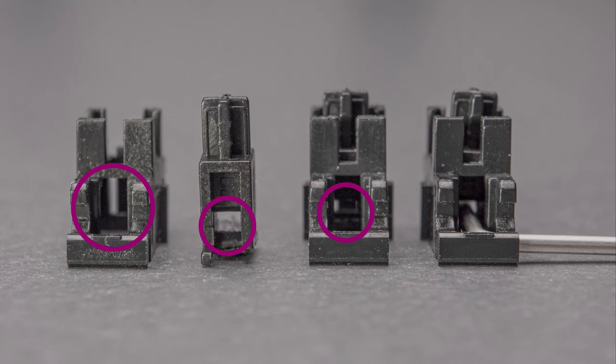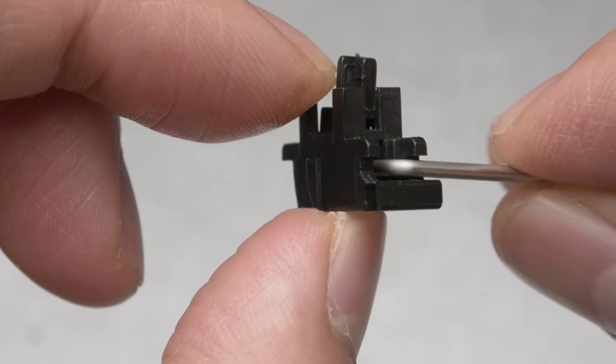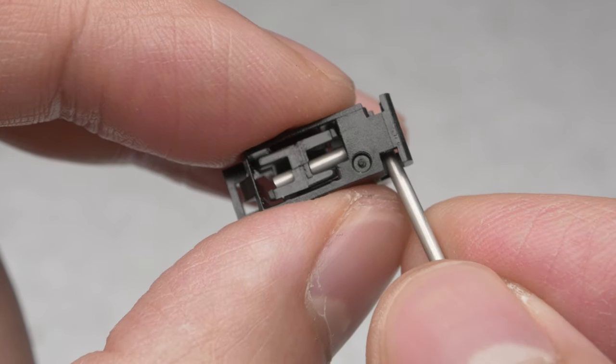Next, we'll insert the stabilizing bar. It goes through this opening on the housing and through the bottom hole on the insert. Align the two parts, insert the bar, and it should look like this at the end. On the bottom, the bar should go through the insert.